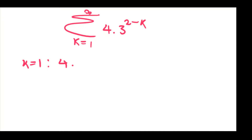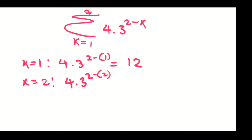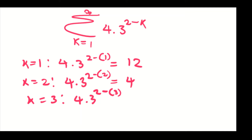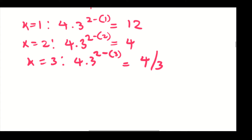When k equals 1, we substitute into the expression and we find 12. When k equals 2, we get 4 multiplied by 3 to the power of 2 minus 2, which equals 4. When k equals 3, we get 4 multiplied by 3 to the power of 2 minus 3, which gives 4 over 3. So our three terms are: first term 12, second term 4, third term 4 over 3.